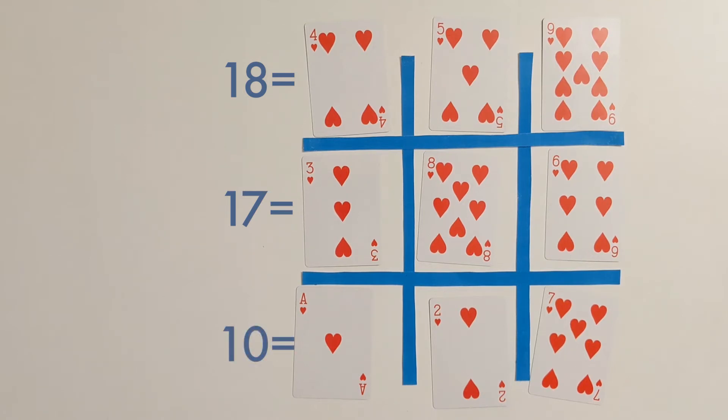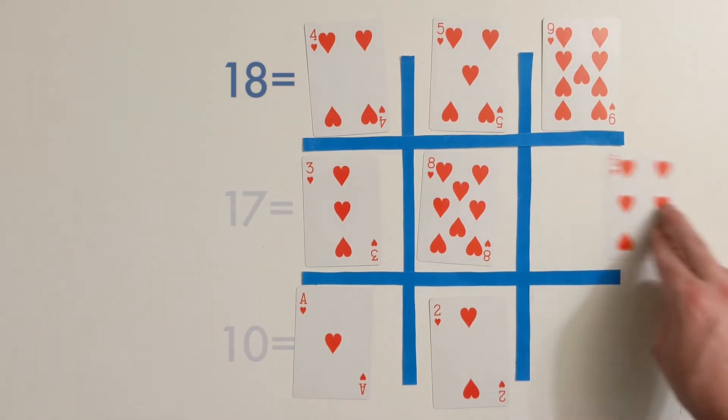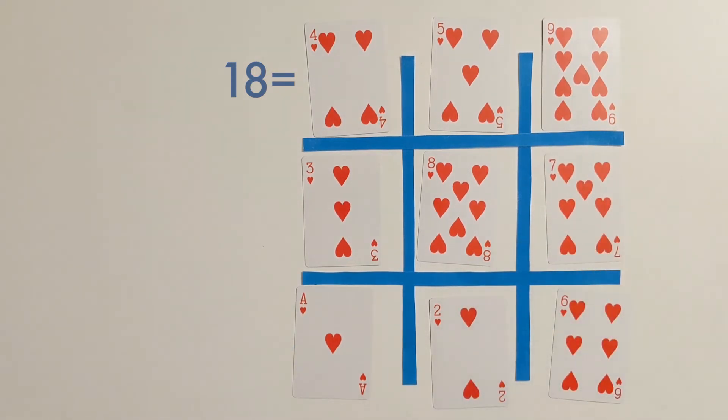And I can make a quick adjustment so that my second row now also adds up to 18. But my third row adds up to 9, and I don't think I can make any changes to it so that it gets closer to 18 without messing up my first two rows. So I don't think 18 is going to be my best magic number.